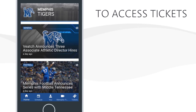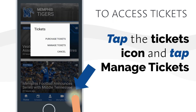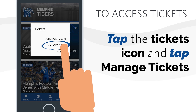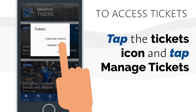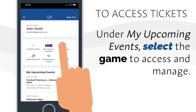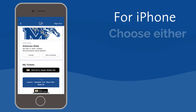To access your tickets, open the app, tap the Tickets icon on the bottom right, and then tap Manage Tickets in the menu. Under My Upcoming Events, you will see a list of all your available events. Select the game you would like to access and manage.